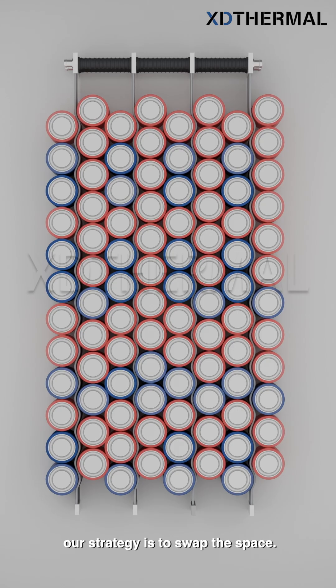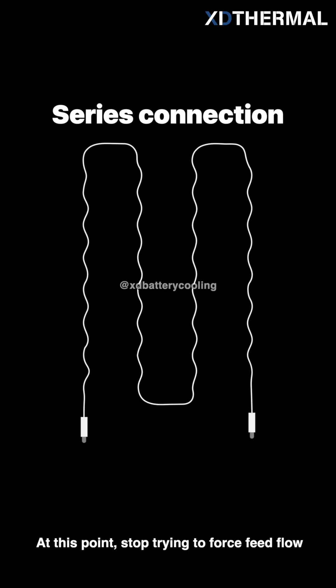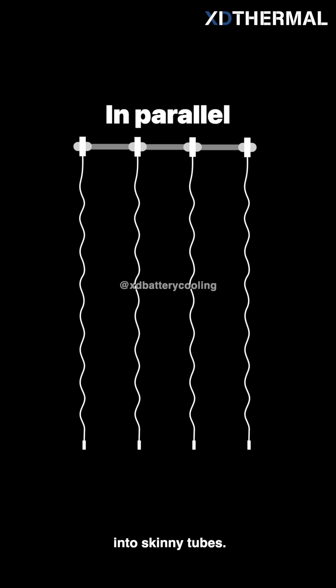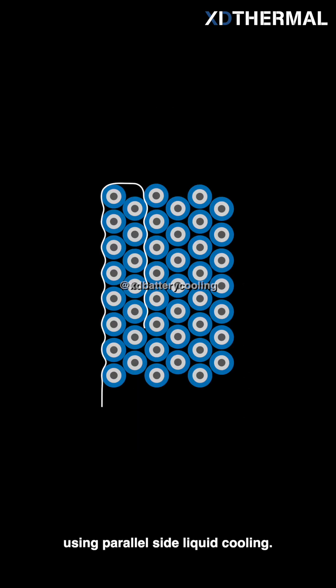our strategy is to swap the space. At this point, stop trying to force feed flow into skinny tubes. We would recommend using parallel side liquid cooling.